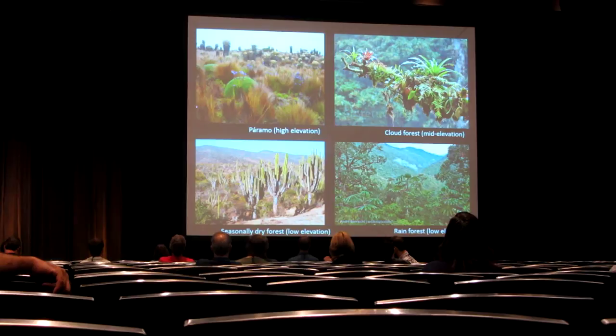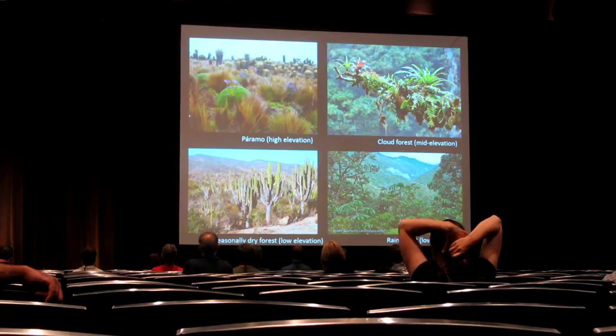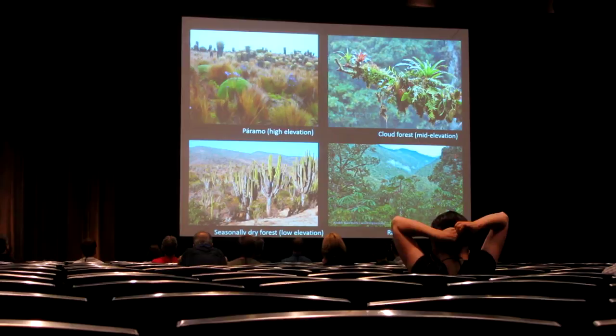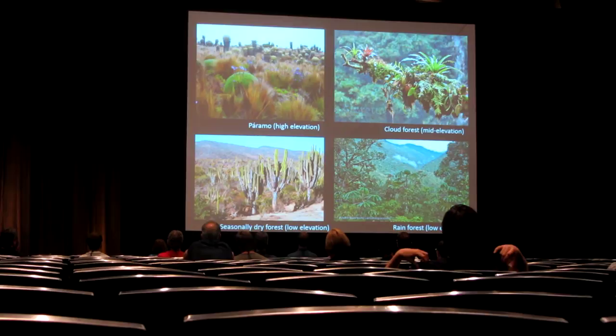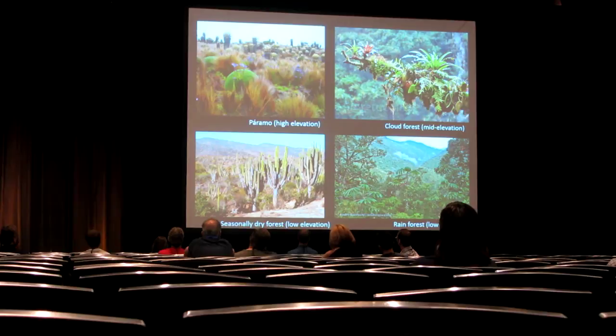The Andes, of course, are not a single habitat type — they're instead a mosaic of diverse habitats. At the highest elevations above treeline, you have high elevation grasslands, paramos and punas. Heading down the wet eastern slope, you have cloud forests that are cool and wet, and further down, lowland tropical rainforests. While in the inter-Andean valleys and on the western slope, you have seasonally dry forests and sometimes desert conditions.